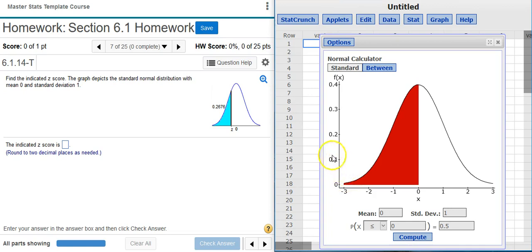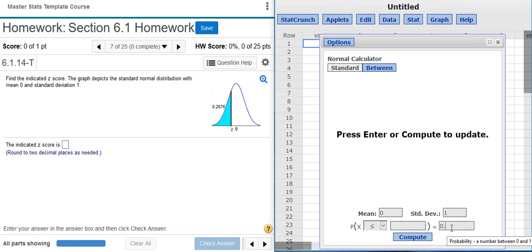All I need to do now is put this area into this field in StatCrunch. We want the area to the left, so I need to make sure that this inequality sign drop-down field is set appropriately.